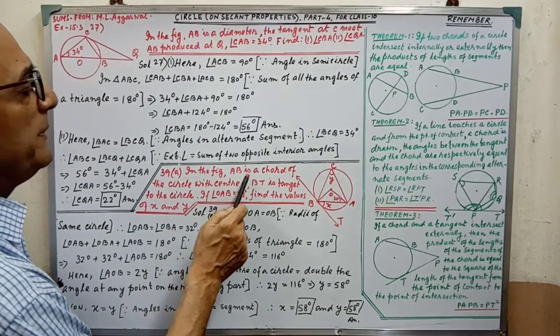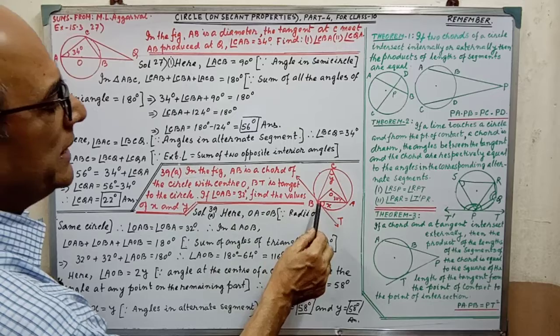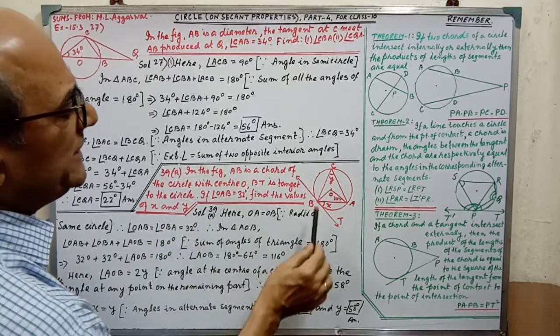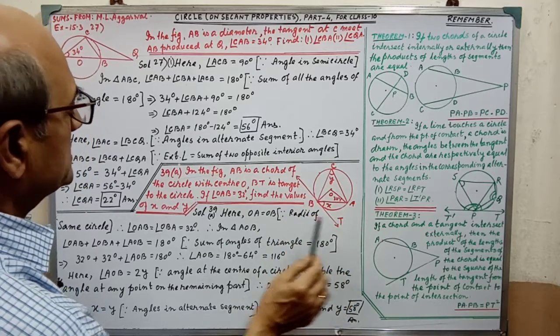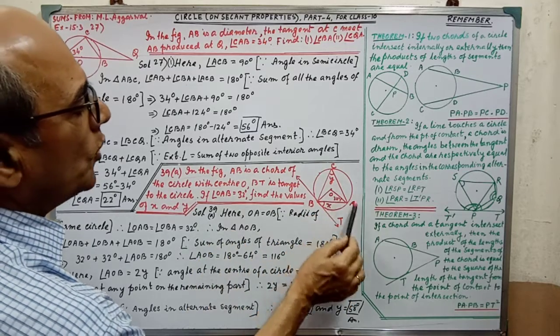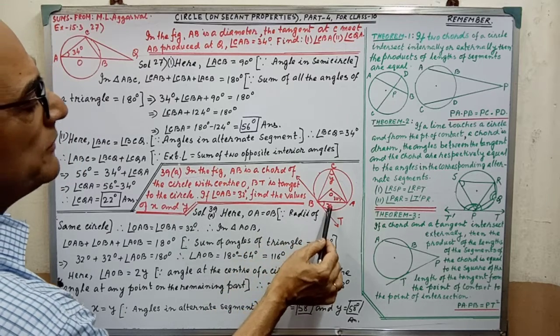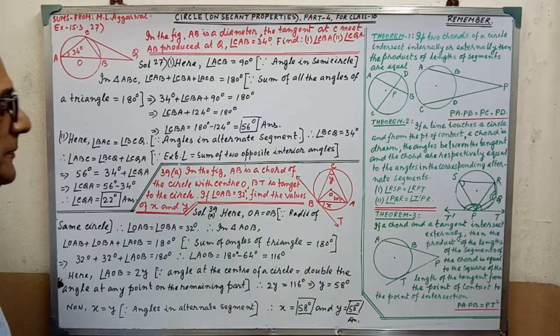Second sum. In the figure, AB is a chord with the center O. BT is the tangent to the circle. Angle OAB equal to 32 degree given. We have to find the values of X and Y. Solution.